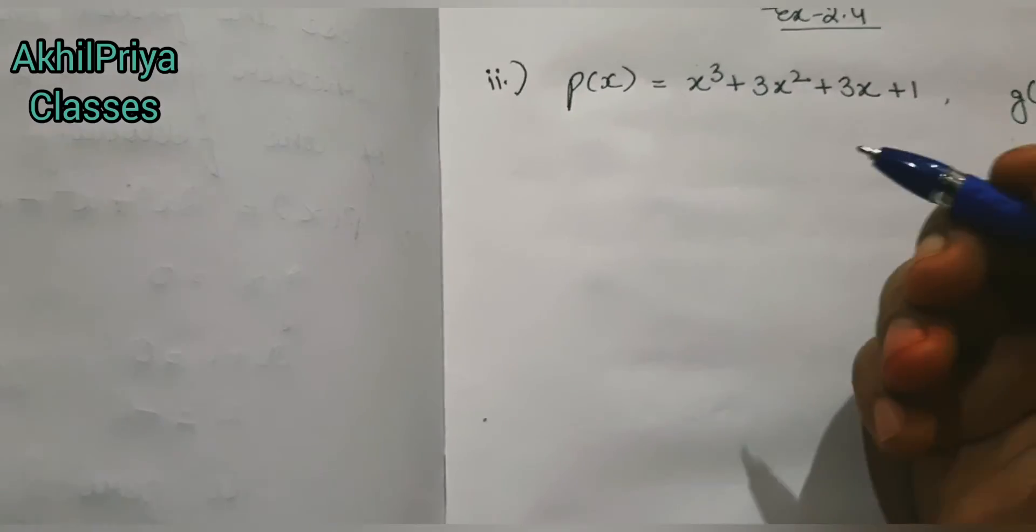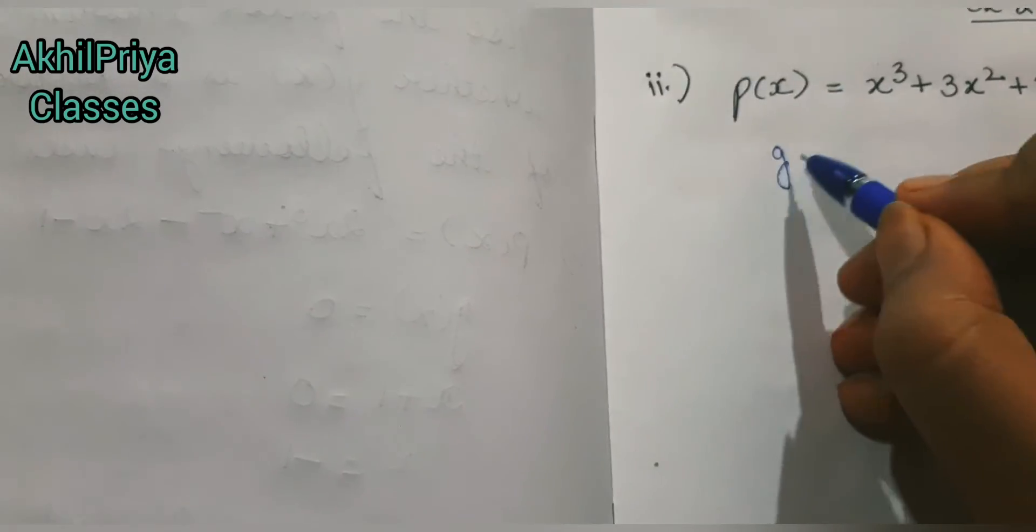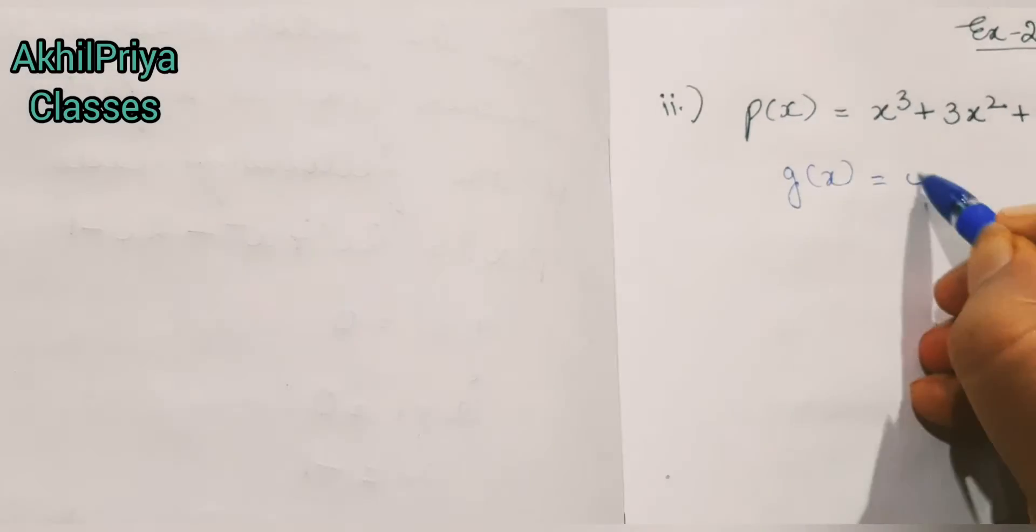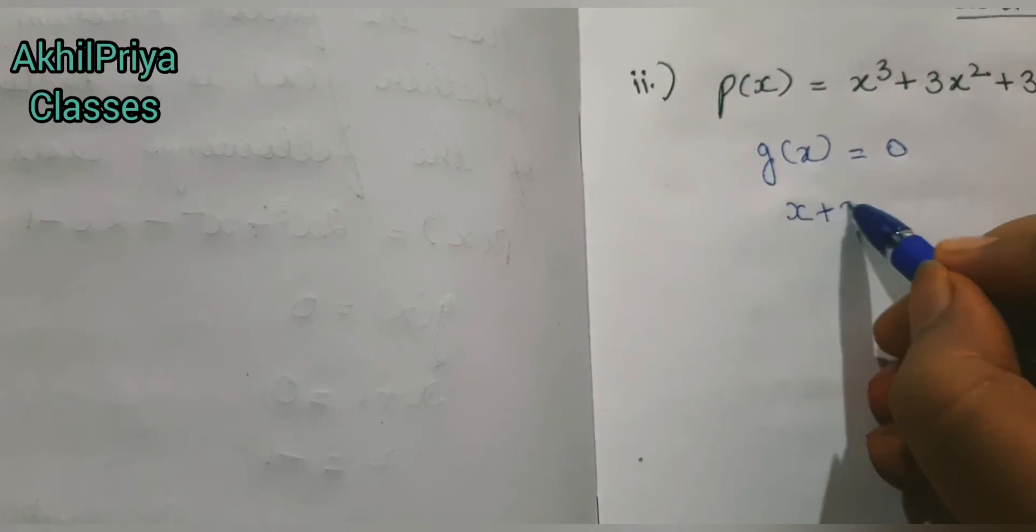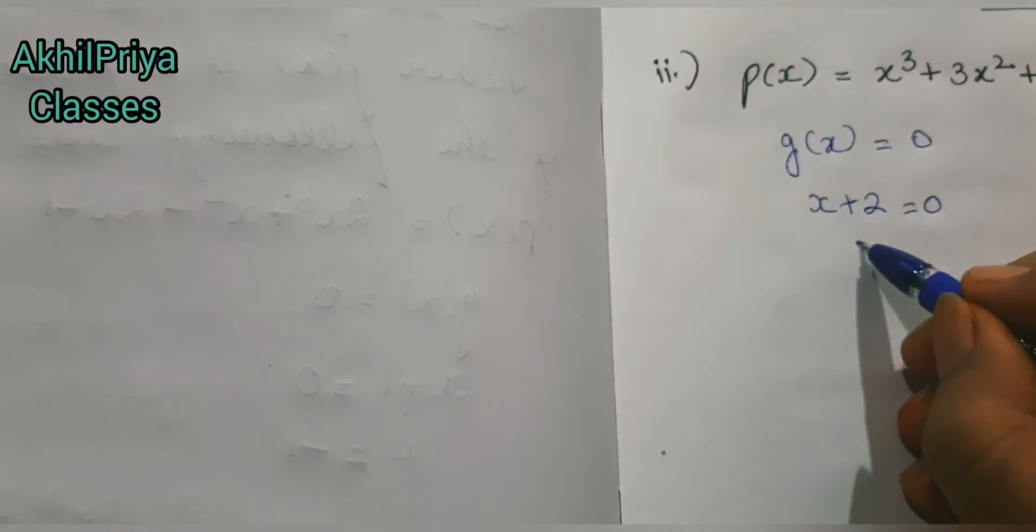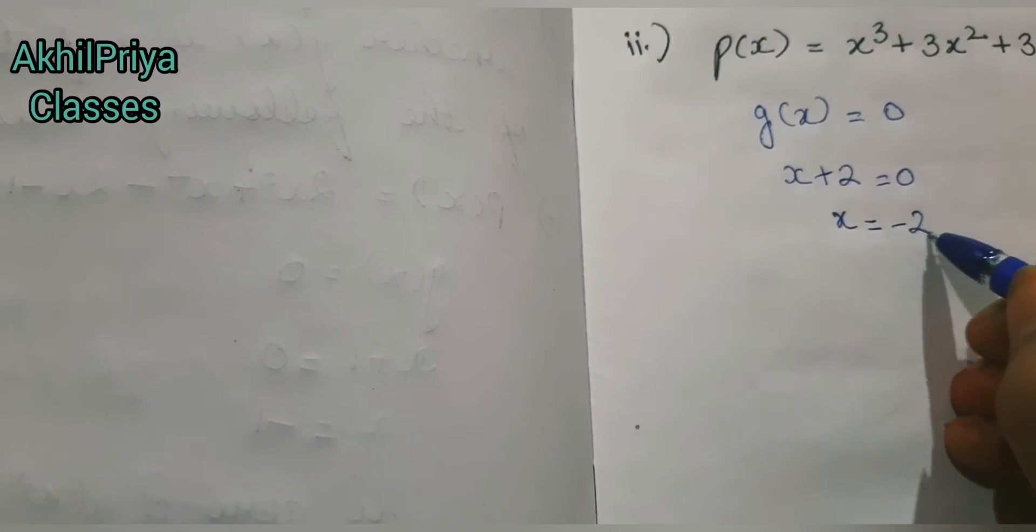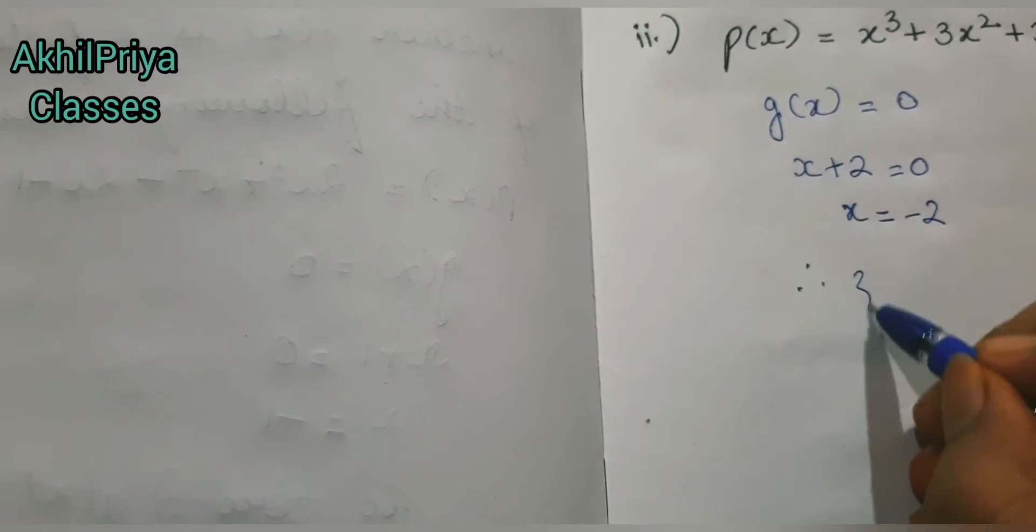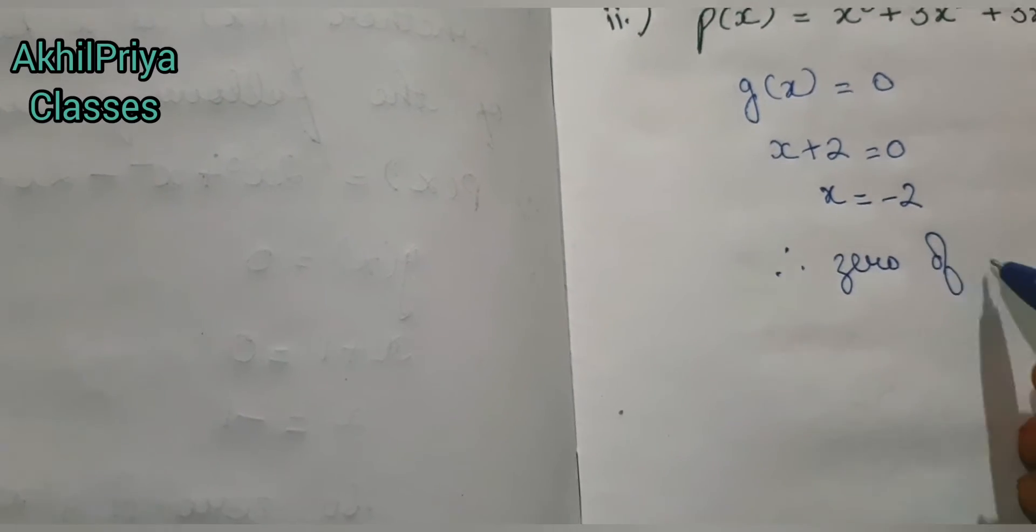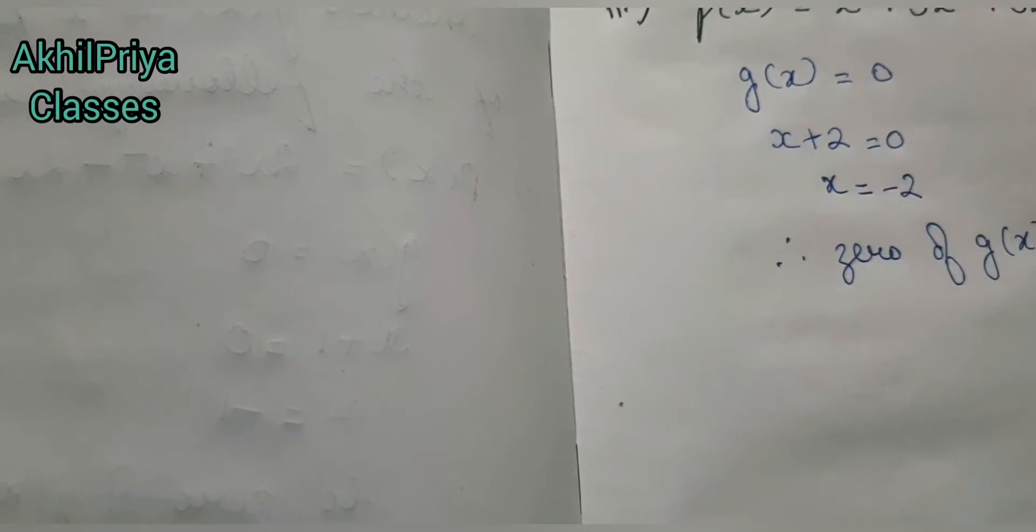So first we put g(x) = 0. I have g(x) as x + 2 = 0, so the value of x comes out to be -2. So the zero of g(x) is -2.